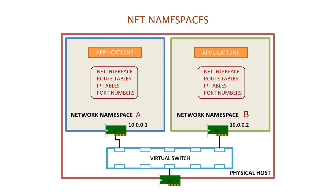It allows a container created with a network namespace to use a separate virtual network stack, loopback device, and process space. You can view the different network settings by executing the IP address command on the host and inside the namespace. In this example, you can notice that, similar to physical or virtual machines, Network namespace A and Network namespace B are assigned different IP addresses.